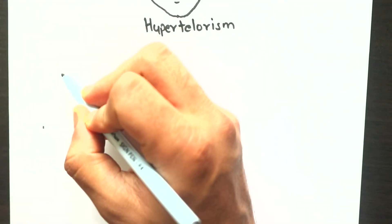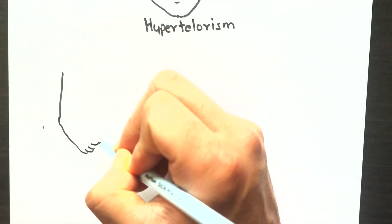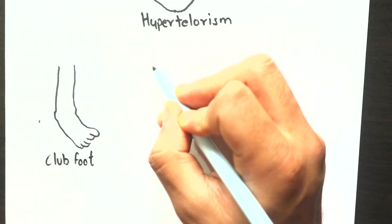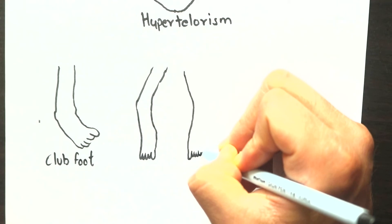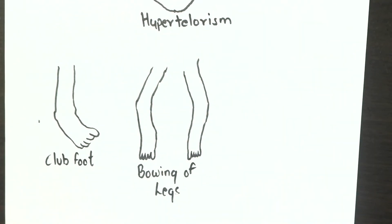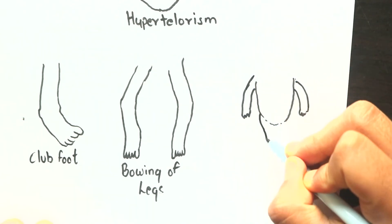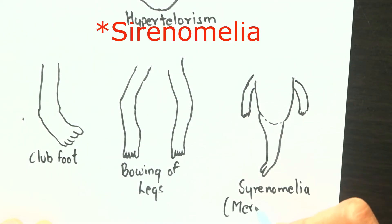There can be different limb abnormalities such as club foot, where the feet rotate internally at the ankle, bowing of legs or genu varum, and sirenomelia or fusion of legs, also known as mermaid syndrome.